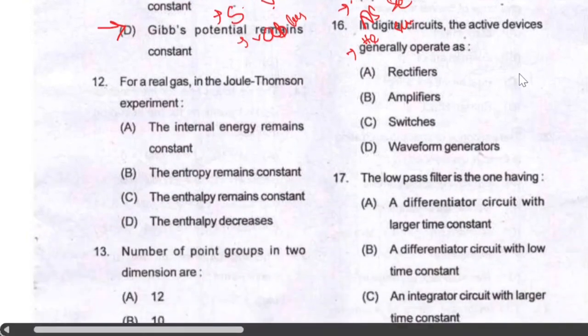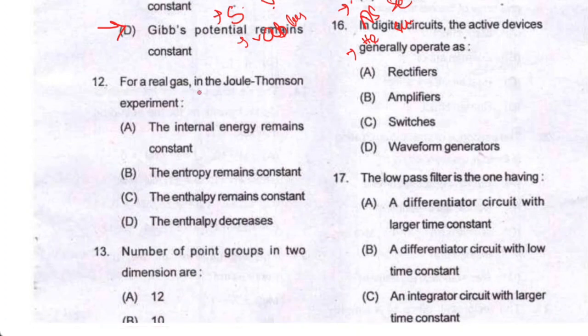Question number twelve: for a real gas in the Joule-Thompson experiment, the enthalpy remains constant. So option C is your correct option.